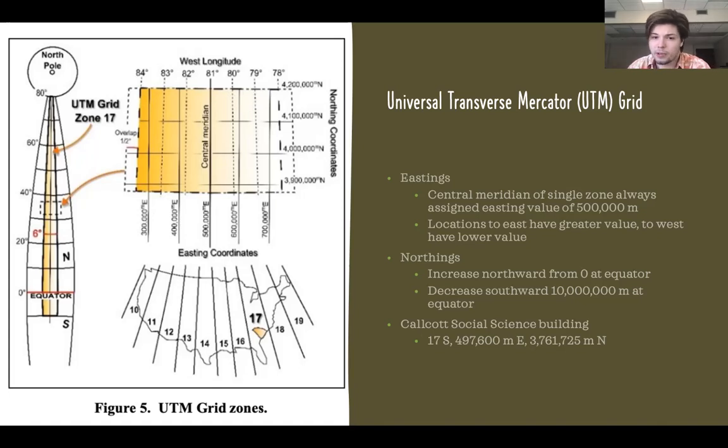And just as an example of what a UTM location might look like, here's an approximate location for the Calcutt Social Science Building, which is 17S as the UTM grid zone, 497,600 meters east as your easting value, and 3,761,725 meters north as your northing value. You can see that this is compared to our specific grid zone's 500,000 east central meridian. And you can see that this value is compared to the equator starting from zero.